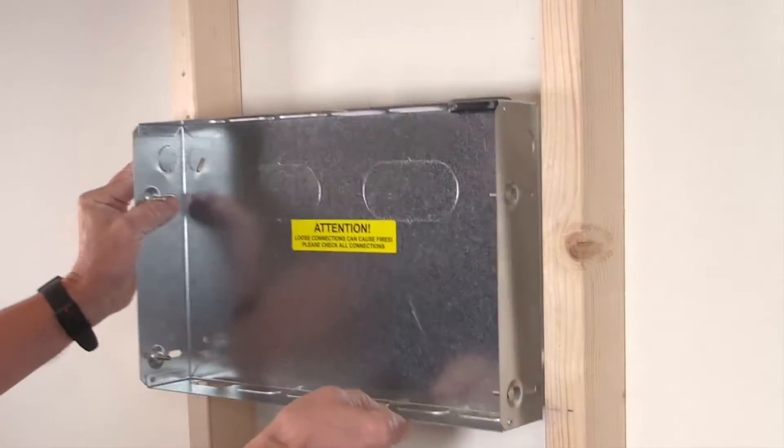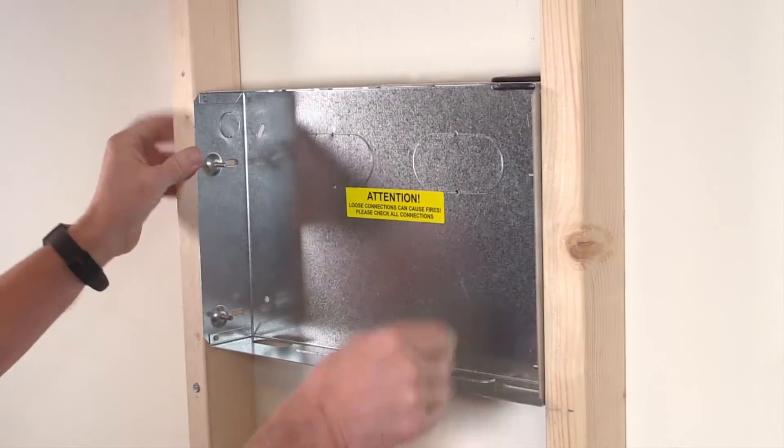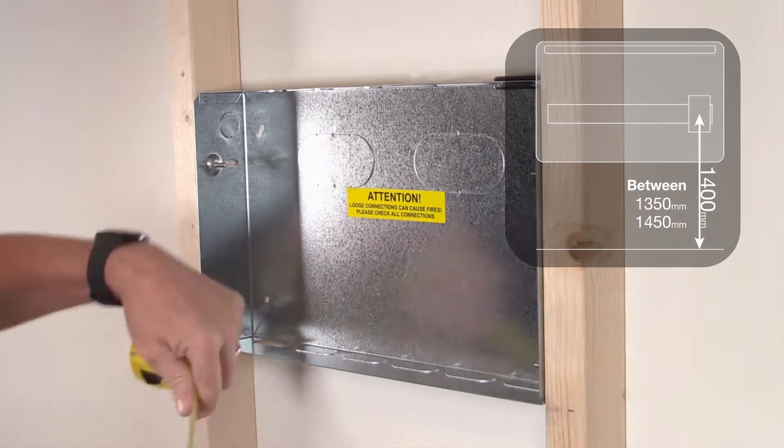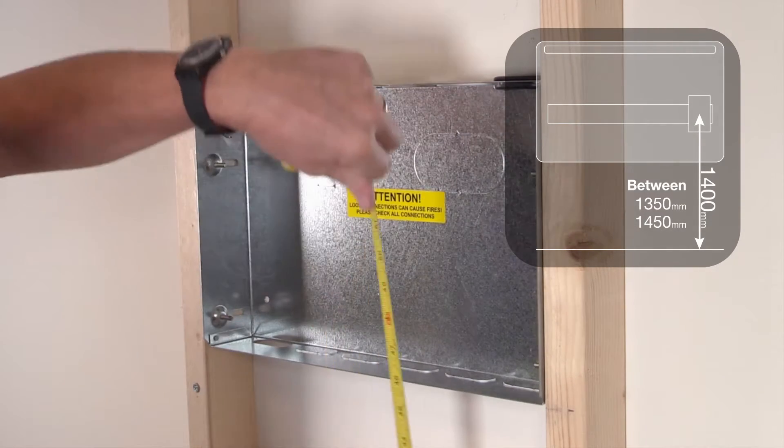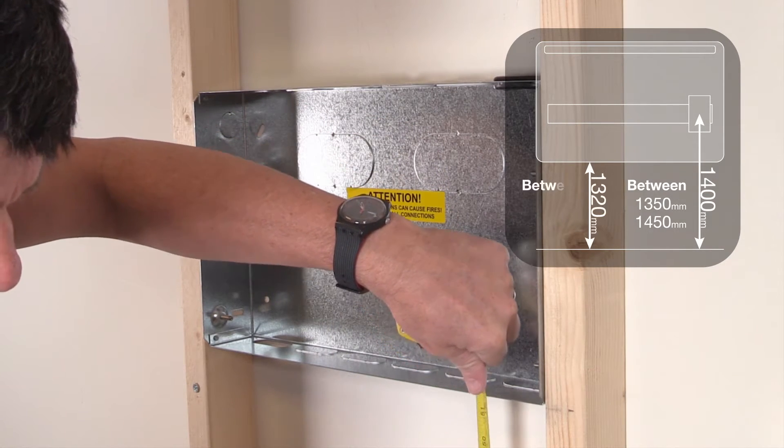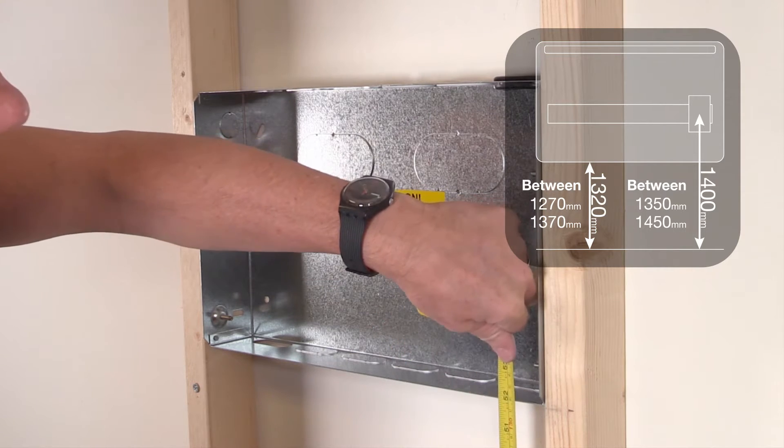To comply with Part M of the building regulations, which states that the main switch should be 1400 millimeters from the finished floor height plus or minus 50 millimeters, the bottom of the back box must be installed at 1320 millimeters from the floor plus or minus 50 millimeters.